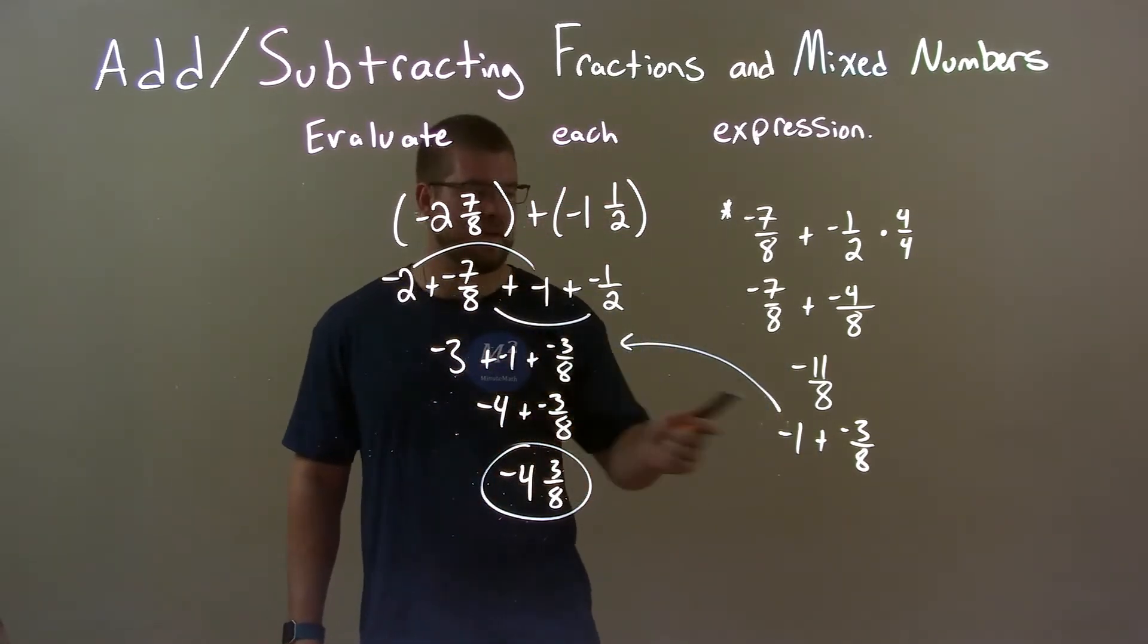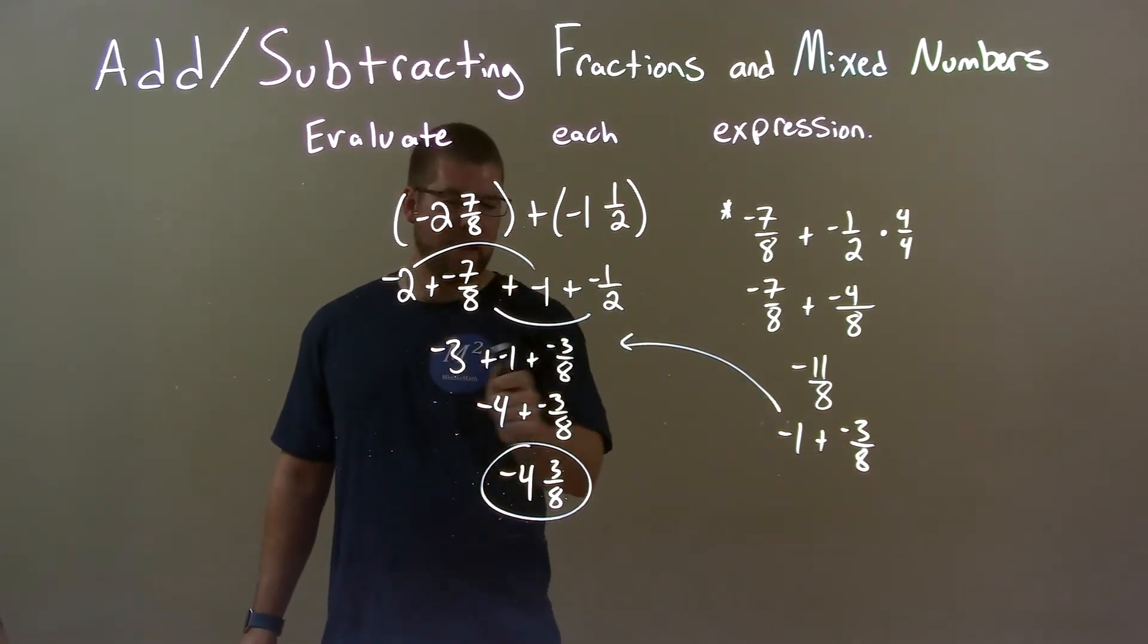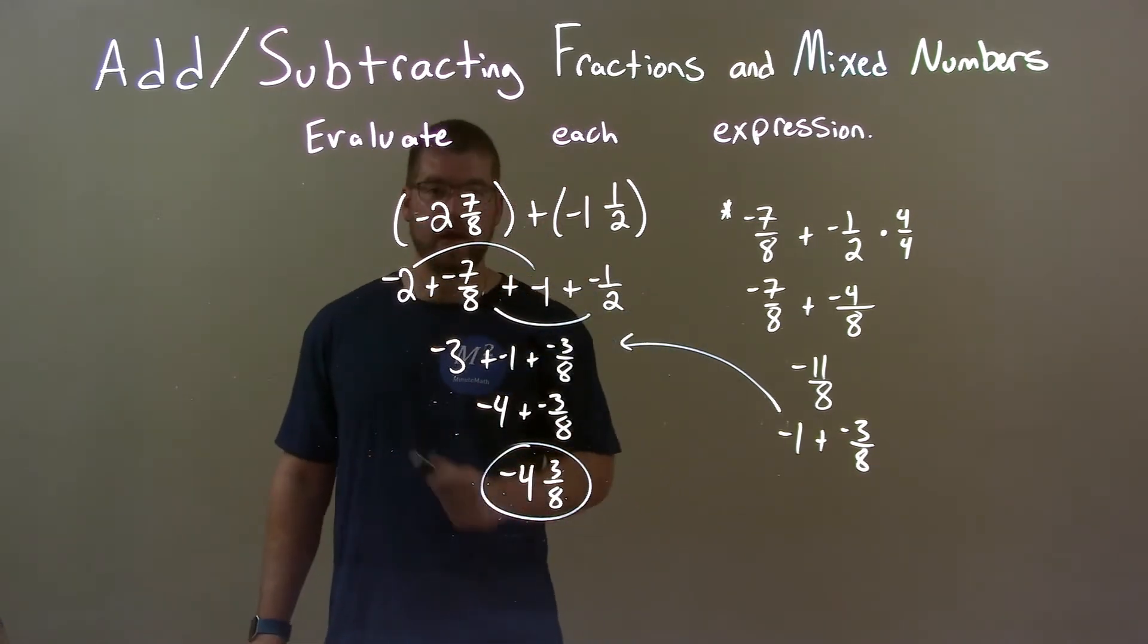And then broke that fraction up right here. Then we add them back up again. Combined whole number and proper fraction. Get our final answer of negative 4 and 3 eighths.